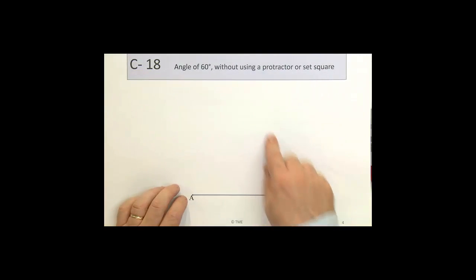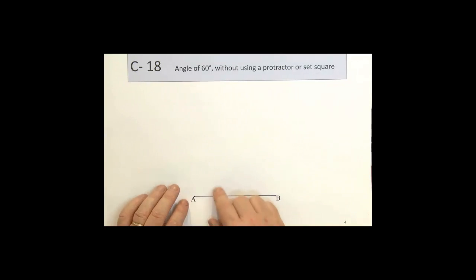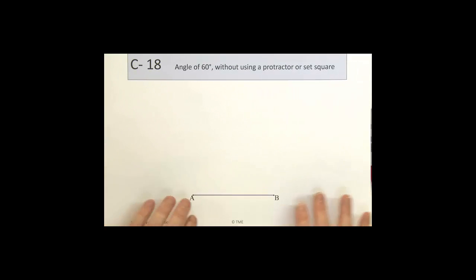Well, in a triangle with three sides, if they're all equal in length, then the three angles will be equal as well. Because the three of them add up to 180, they'll all be equal to 60.